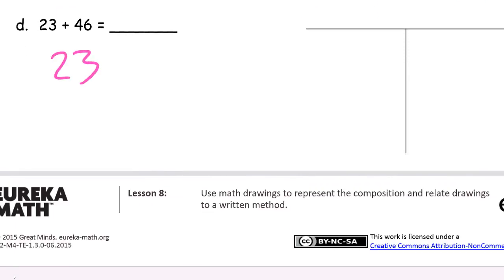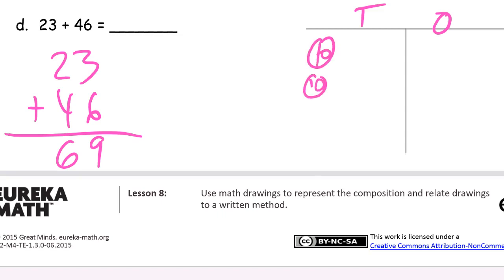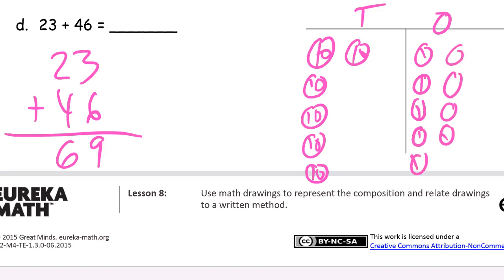23, 46, 6 and 3 is 9, 2 and 4, 6 10s and 1s. 23 is 2 10s and 3 1s, and the 46 is going to be 1, 2, 3, 4 10s and 6 1s: 1, 2, 3, 4, 5, 6 1s. And count them: 6 10s, 9 1s, for 69.